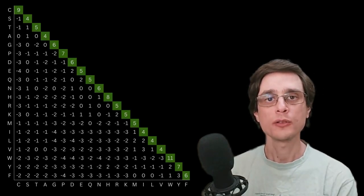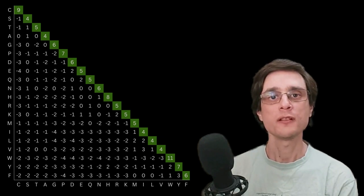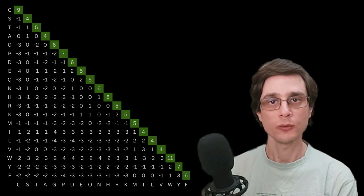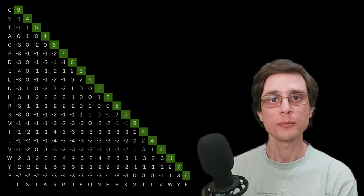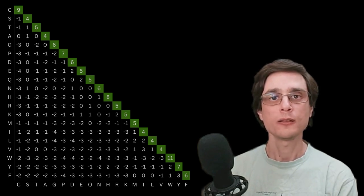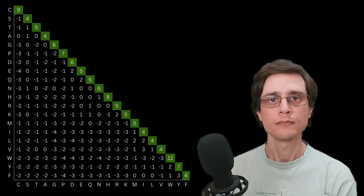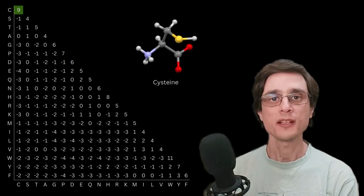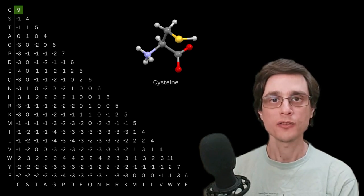The diagonal holds the scores for matches, which is the presence of the same residue in the same position in both aligned sequences. These scores are positive as they increase the score of the alignment, meaning the sequences are more similar. Not all match scores are the same though. For example, the score of cysteine match is significantly higher than most other scores for matches.